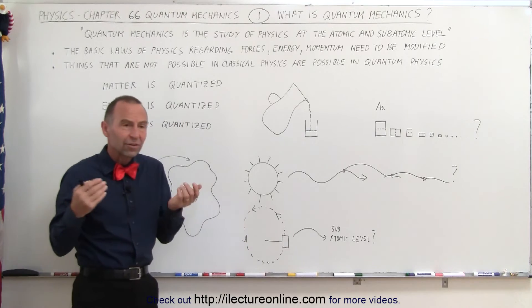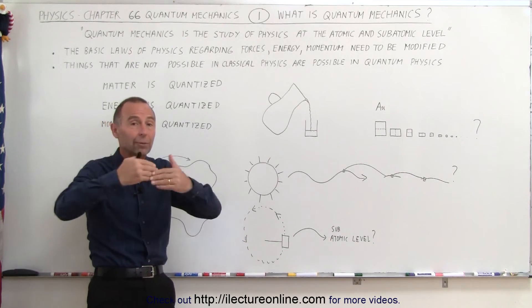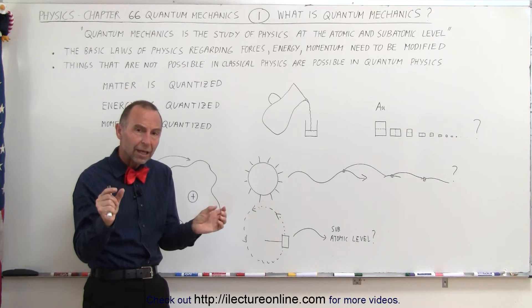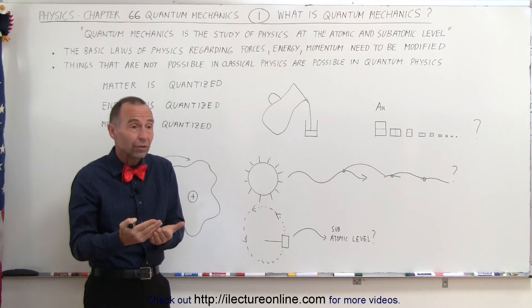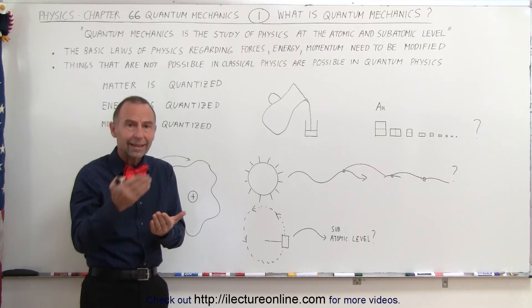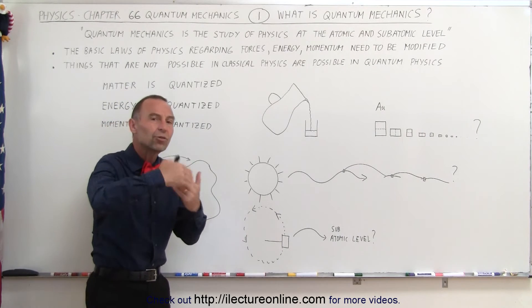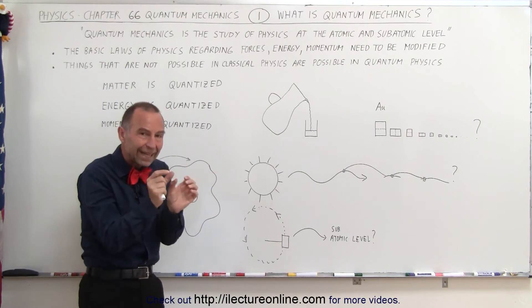Also, when we think of things like momentum, when things collide, we know momentum is always conserved. But what happens when we get down to the subatomic level or the atomic level? Is momentum still conserved? And the answer is yes, but at that level, it's no longer a continuous change from one to another. It's, again, quantized.